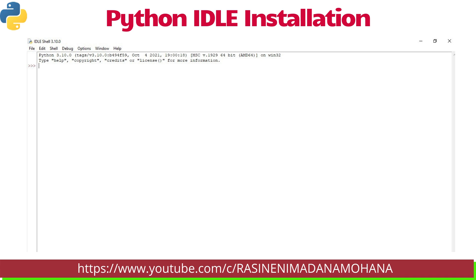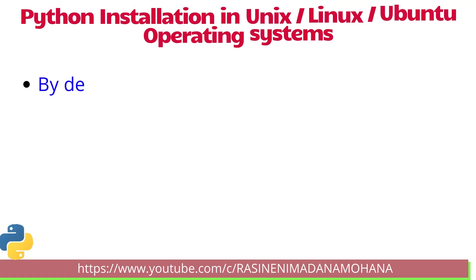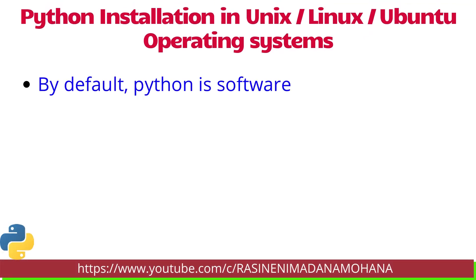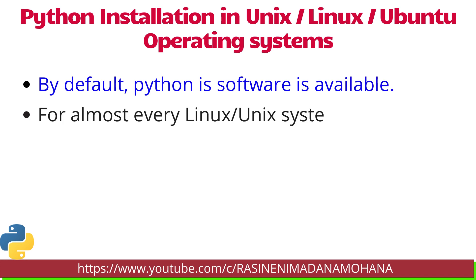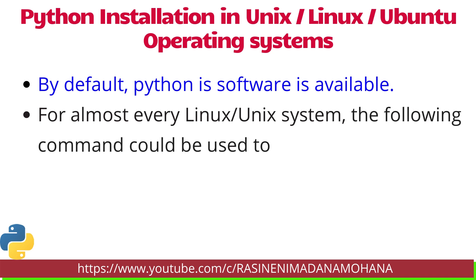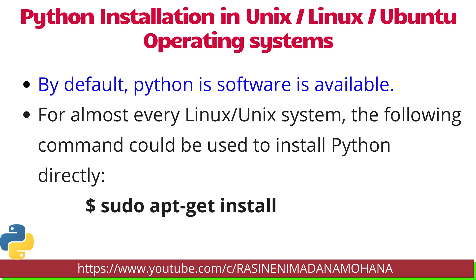Coming to Python installation in Unix, Linux, Ubuntu, and similar operating systems — for almost every Linux or Unix system, Python software is available by default. The following command is used to install Python directly: dollar sudo apt-get install python3.10. Whatever version you are installing you can select, and then automatically the installation will be done.